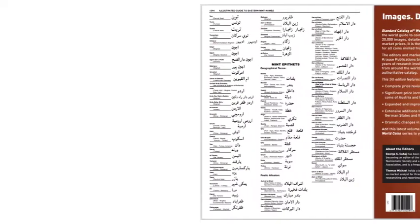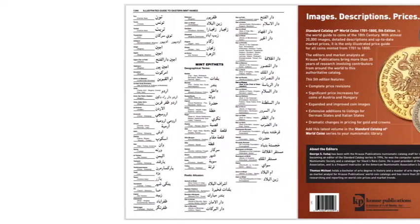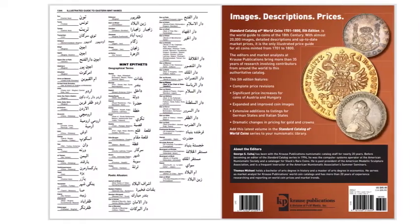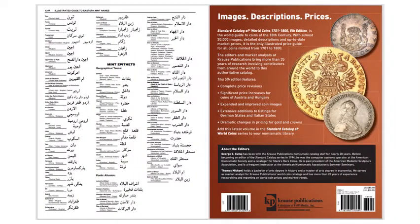There are over 20,000 actual size images contained in this book. To facilitate the easy identification and attribution of coins of the era, this volume features numerous helpful mint and privy mark charts in the introductions.